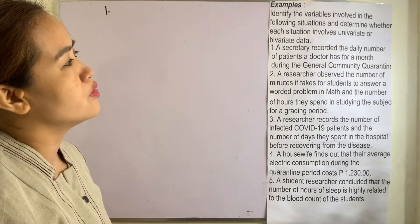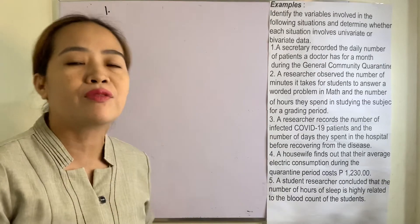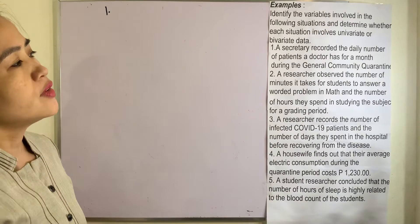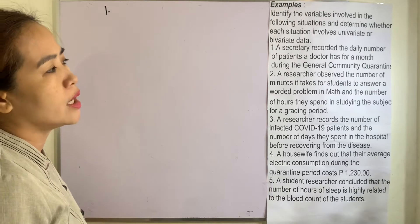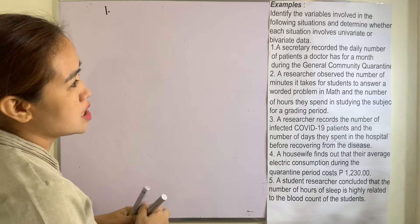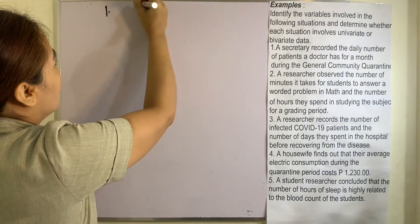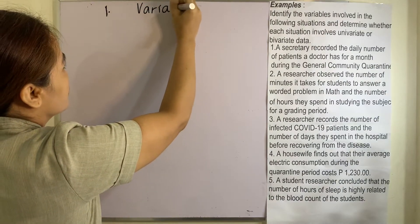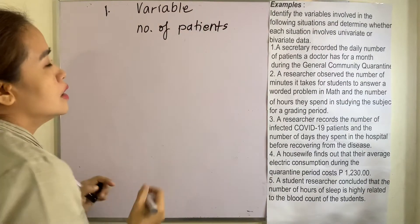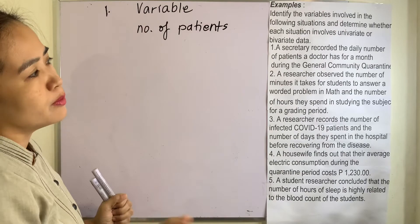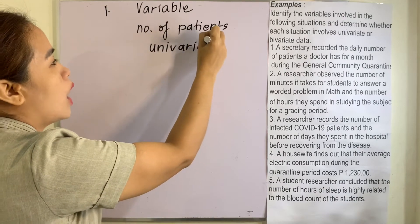Let's take these examples now. Identify the variables involved in the following situations and determine whether each situation involves univariate or bivariate data. Number one: a secretary recorded the daily number of patients a doctor has for a month during the general community quarantine. The variable here is number of patients. There is no other variable involved, so therefore this one is univariate since we only have one variable.